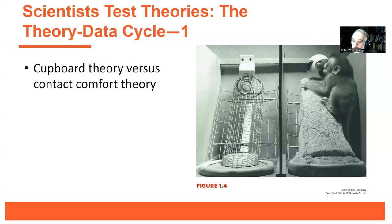Harlow had two artificial mothers: one on the left was essentially a wire cage with a nipple the animal could feed from; the mother on the right provided no food but looked more like the animal and was covered in terry cloth. This set up two competing theories: the cupboard theory — you go there to get food — and the contact theory. Two models, one experiment: expose the animals to both mothers and see which they prefer.